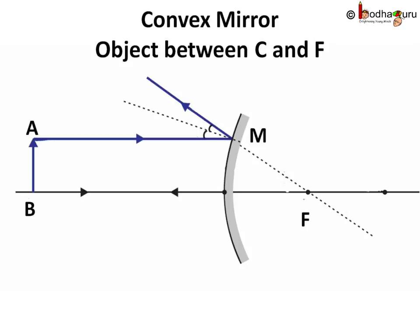Now we take a convex mirror. We will again take the same object AB. We again follow two rays coming from point A. Let's see what happens this time.